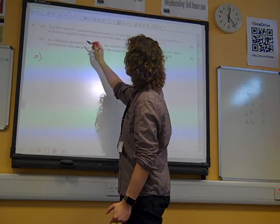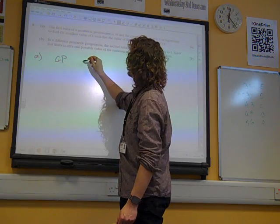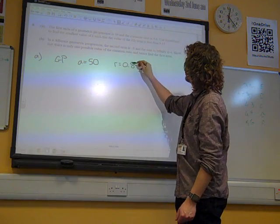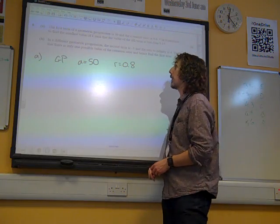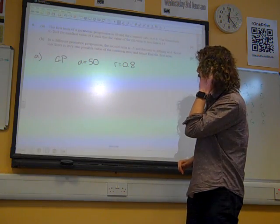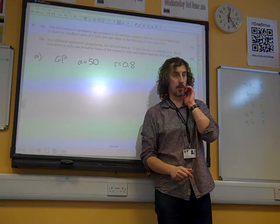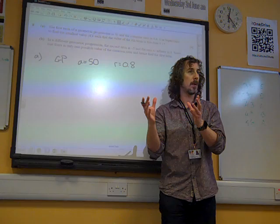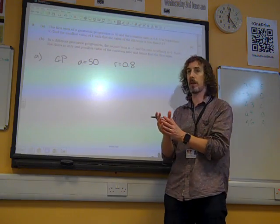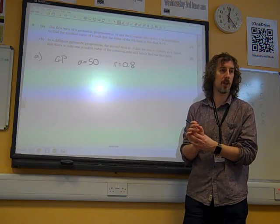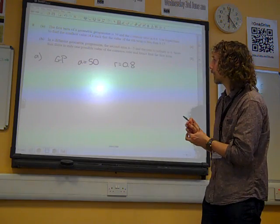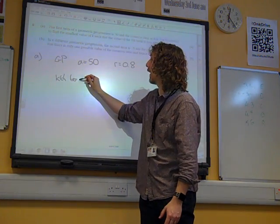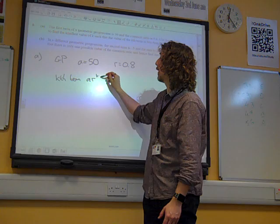A moment about GP here. The first term of the geometric progression, GP, A is 50, and the common ratio is 0.8. Use logarithms to find the smallest value of K such that the value of the Kth term is less than 0.15. I saw some really poor kind of manipulating logarithms in this. People doing really crazy things about how they've linked logs together. So let's think about what the question's saying. We want the smallest value of K such that the Kth term is less than 0.15. The Kth term is AR to the K minus 1.